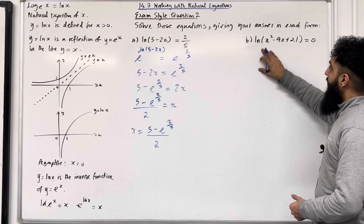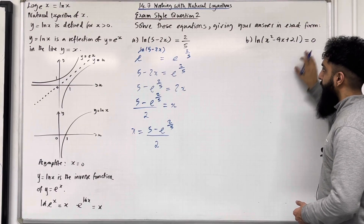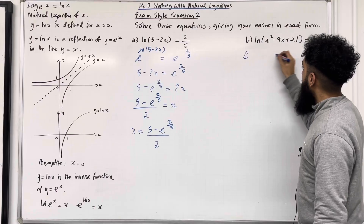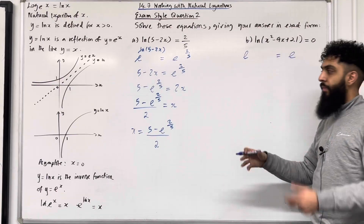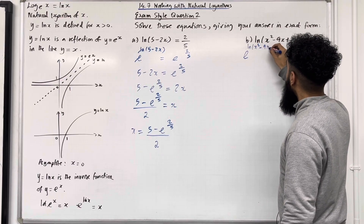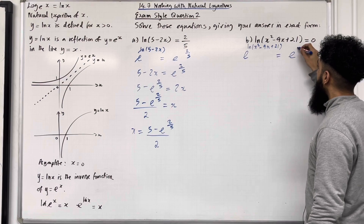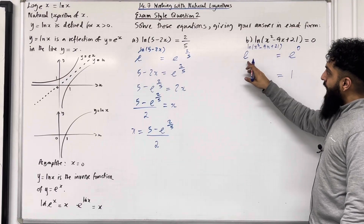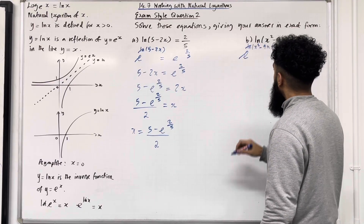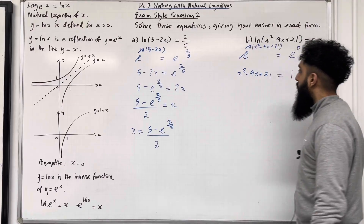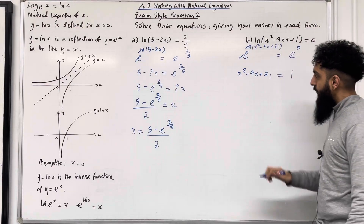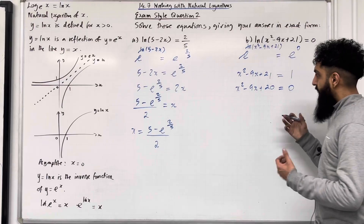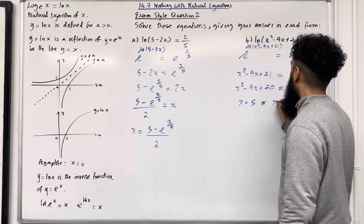Part b: ln(x² - 9x + 21) = 0. The first step is to get rid of the ln by applying e on both sides: e^(ln(x²-9x+21)) = e^0. Anything to the power 0 is 1, so the right-hand side reduces to 1. The e and ln cancel out, giving x² - 9x + 21 = 1. Taking 1 to the left: x² - 9x + 20 = 0. Solving this quadratic: x = 5 or x = 4.